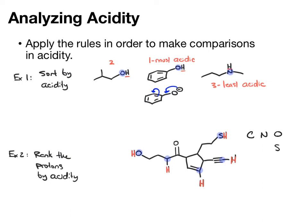Our acidity trend increases in this direction and this direction. So, of these, the hydrogen on the sulfur is going to be the most acidic. Next, we'll have the hydrogen on the oxygen.